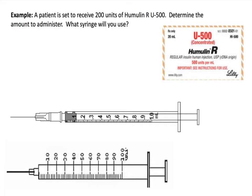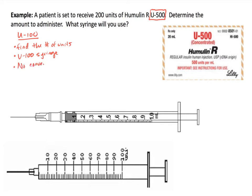The first thing to notice is that we are talking about insulin — not just any type, but U500 insulin. So far in our module, we have seen U100 insulin. With U100, all we needed to do was find the number of units and mark that on a U100 syringe. No conversions were needed, because those syringes are specifically calibrated for U100. A common mistake is to convert U100 into milliliters and use a milliliter syringe, but that wasn't appropriate because we use U100 syringes.